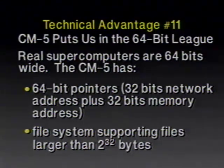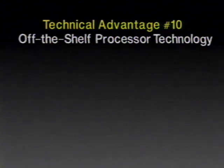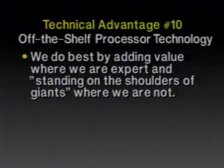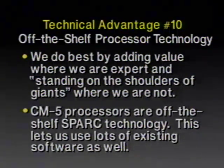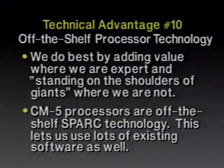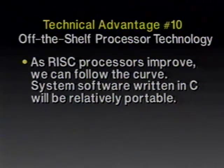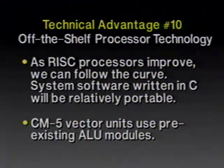The address space is no longer limited to 32-bits, and the file system supports files larger than 2^32 bytes — already finding that a 32-bit file length is a limitation. In every way that seems interesting, the CM5 is squarely a 64-bit machine. Technical advantage number 10: we are using off-the-shelf processor technology as well as off-the-shelf memory technology. This allows us to ride on the industry technology curve rather than having to constantly redesign processors ourselves. We as a company do best by adding value where we are expert and by standing on the shoulders of giants in the areas where we are not. By using off-the-shelf SPARC technology, we take advantage of many other companies designing good processors and lots of existing software.